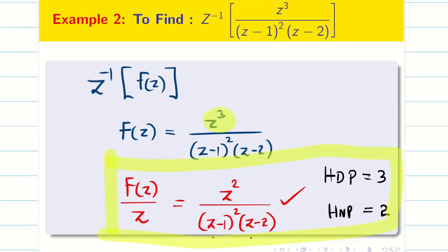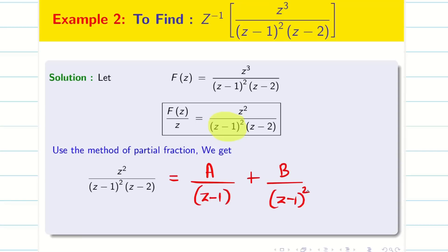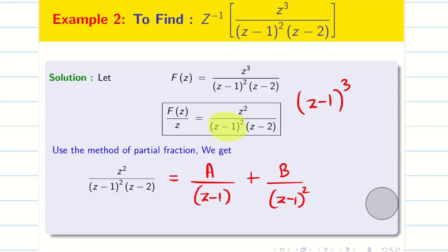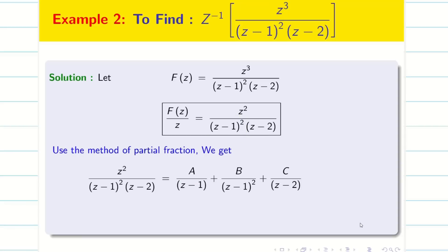Now I can apply partial fraction. Remember how to write the partial fraction when the power of a term is more than 1. Here we have Z minus 1 whole square, so I write this as A by Z minus 1 plus B by Z minus 1 whole square. If you had Z minus 1 whole cube, you would add one more term. The power of Z minus 1 is 2, so I write A by Z minus 1 plus B by Z minus 1 whole square, then C by Z minus 2. We need to find A, B, and C.